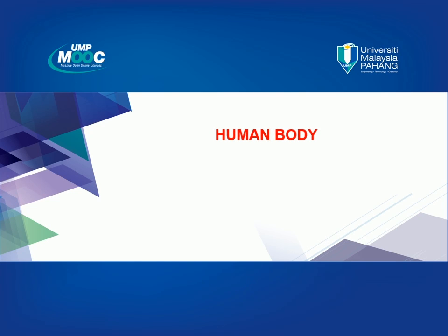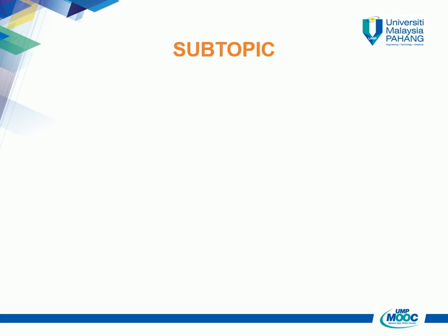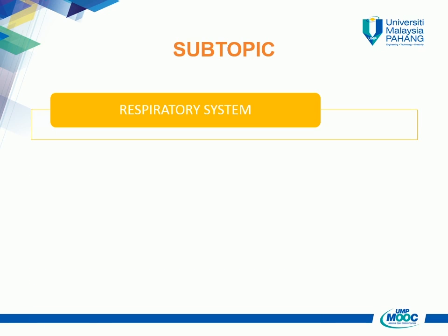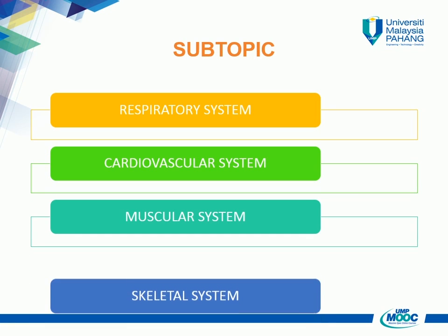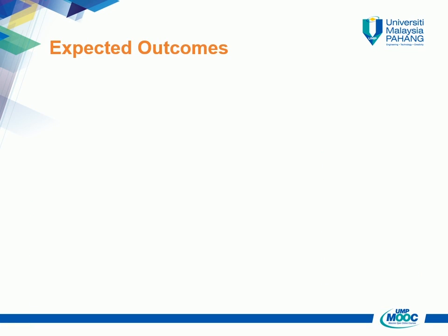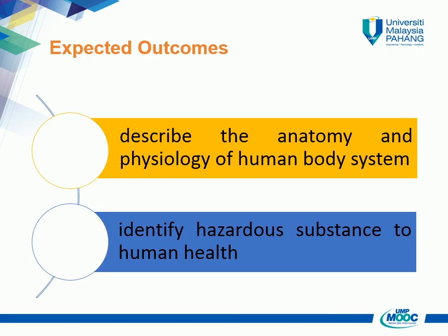Welcome to human body anatomy and physiology. This chapter is divided into three parts. In part one, we will discuss the respiratory system, cardiovascular system, muscular system, and skeletal system. At the end of this chapter, the student should be able to describe the anatomy and physiology of human body systems and identify hazardous substances to human health.